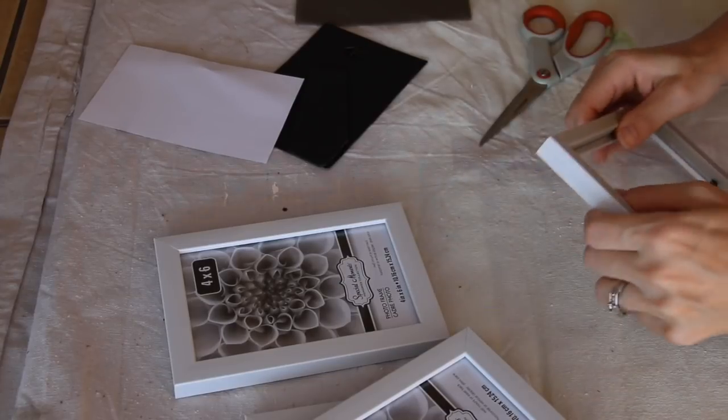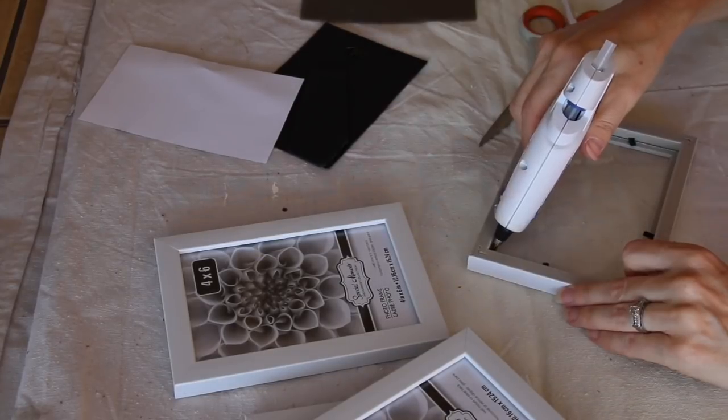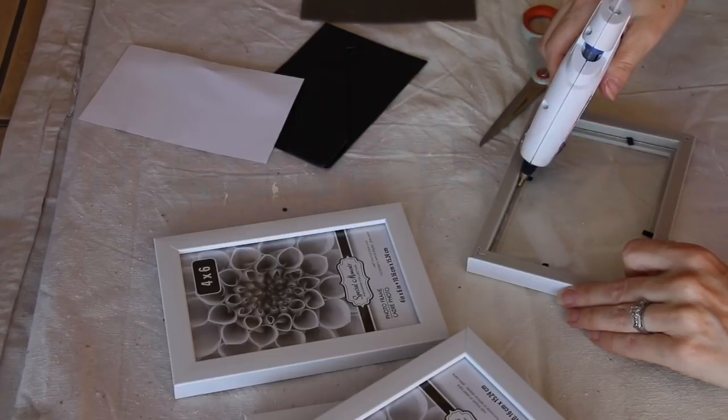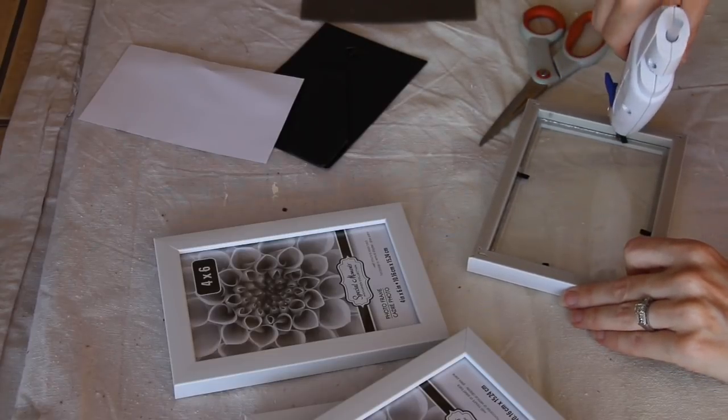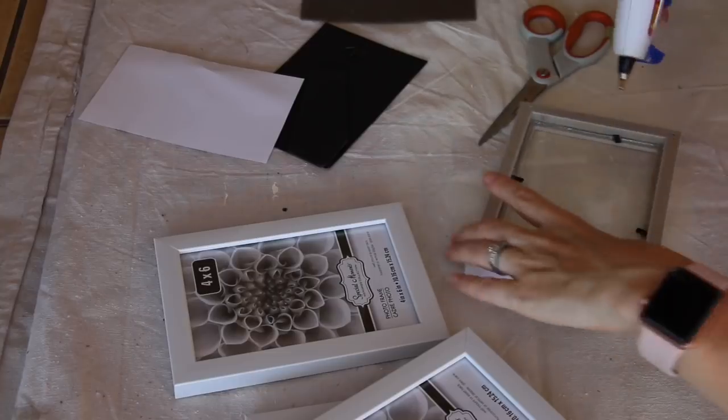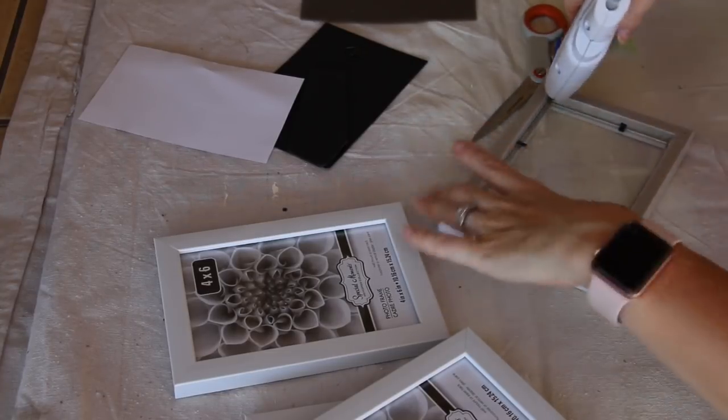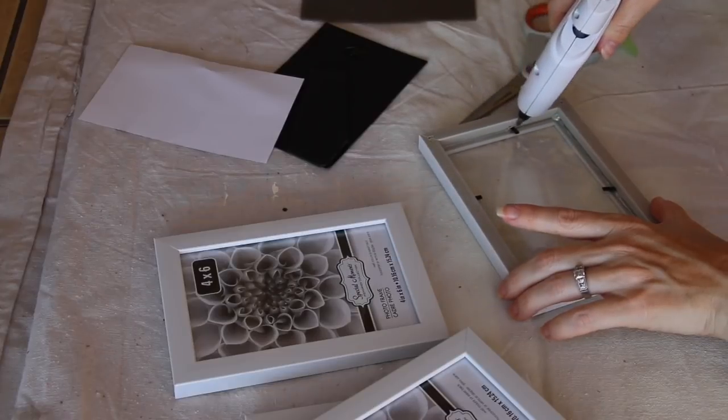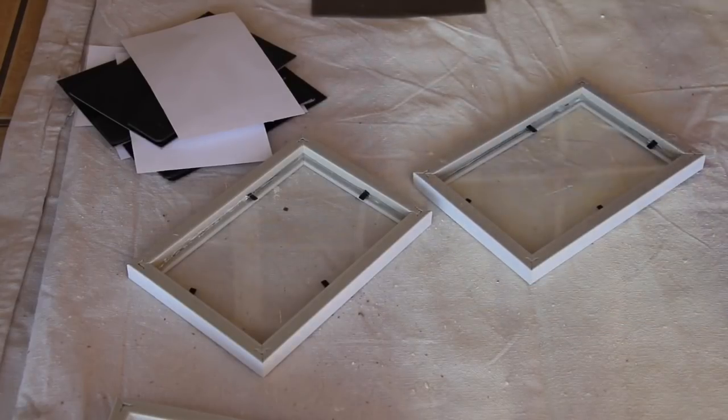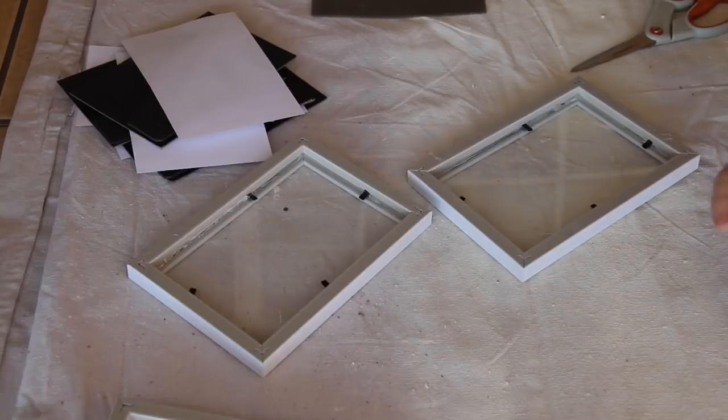Now in my hot glue gun I have Gorilla hot glue, and so that is what I will be using on this project. You'll see that I'm going to push those down and I'm going to glue all the way around the edges. Repeat this exact same process with all four frames.